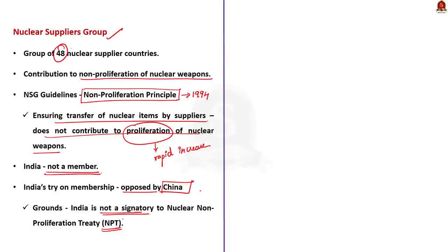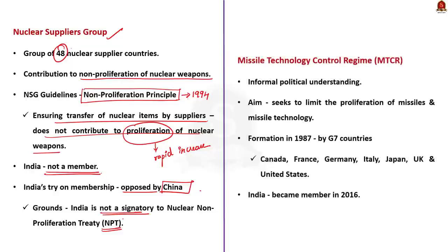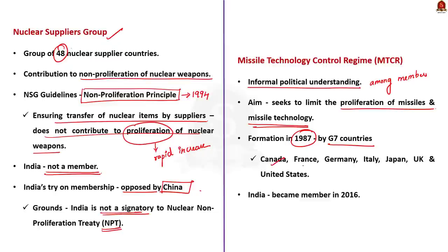The Missile Technology Control Regime is an informal political understanding among participating countries that seeks to limit the proliferation of missiles and missile technology. It was formed in 1987 by the G7 countries: Canada, France, Germany, Italy, Japan, UK, and United States. India became a member of MTCR in 2016.